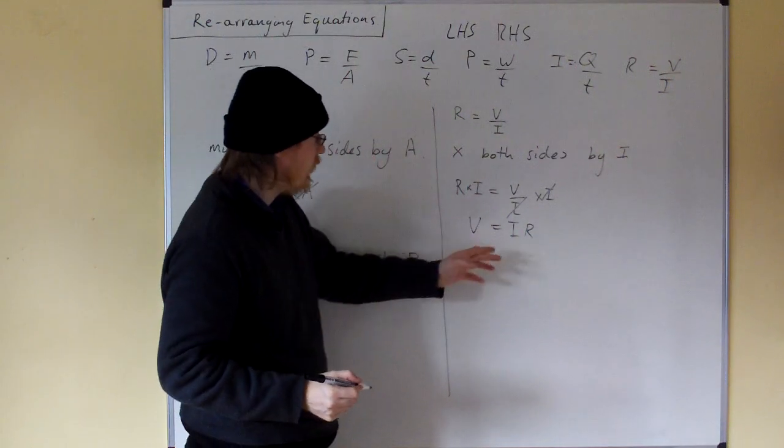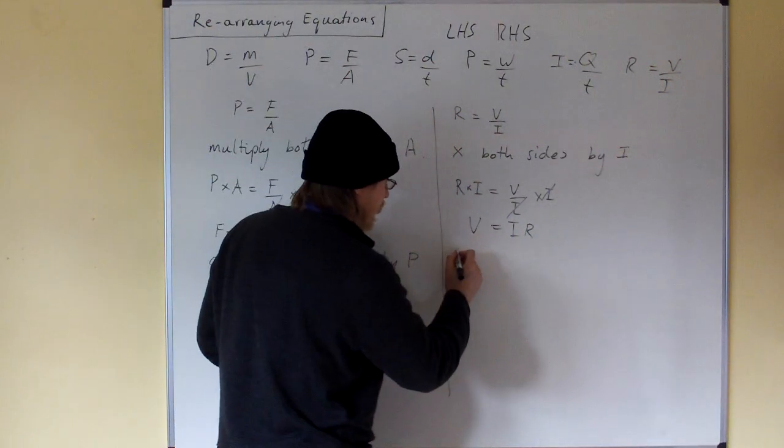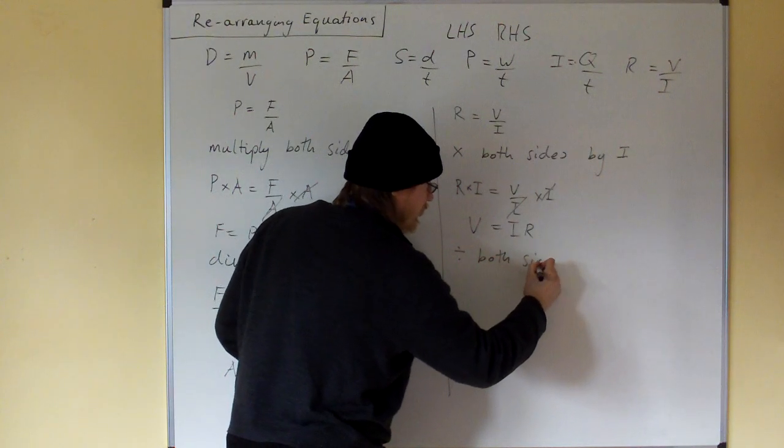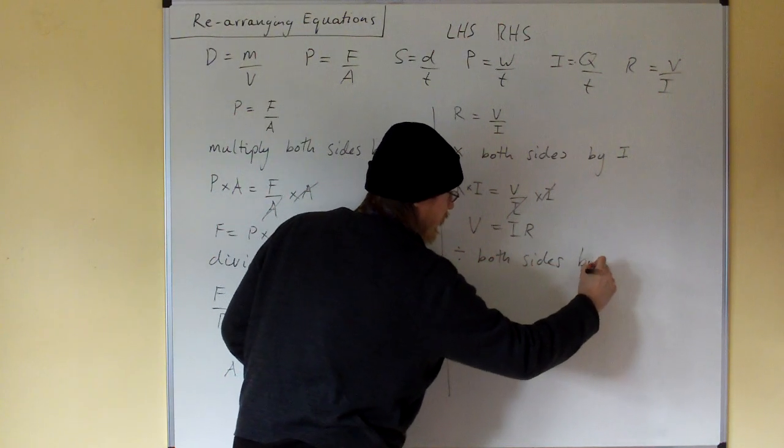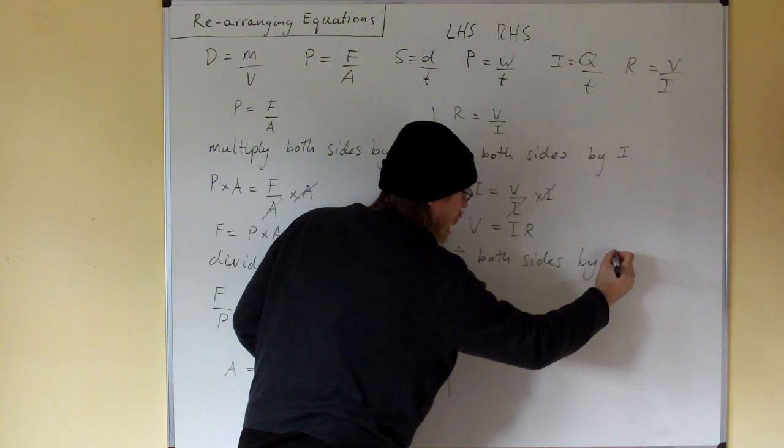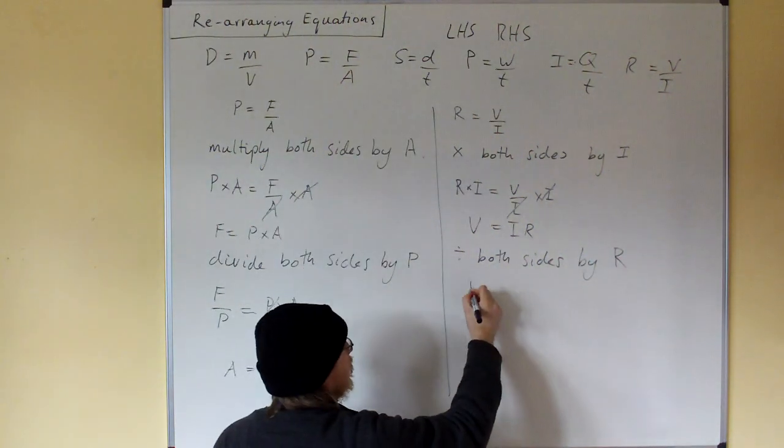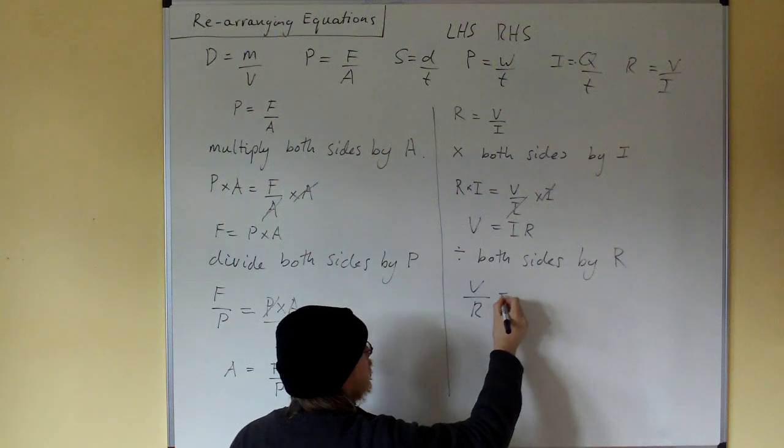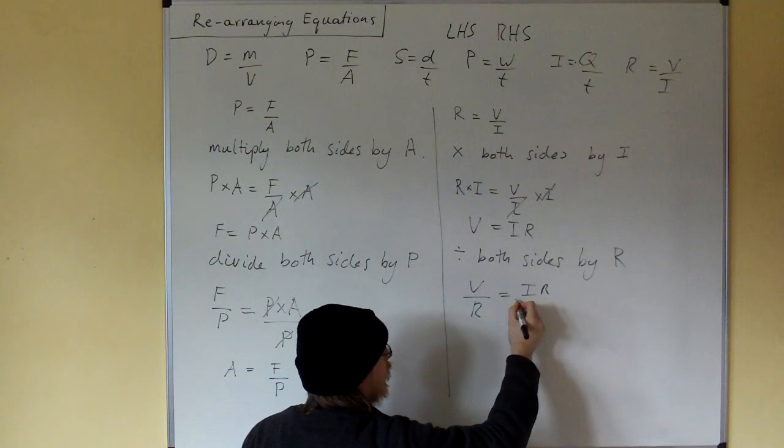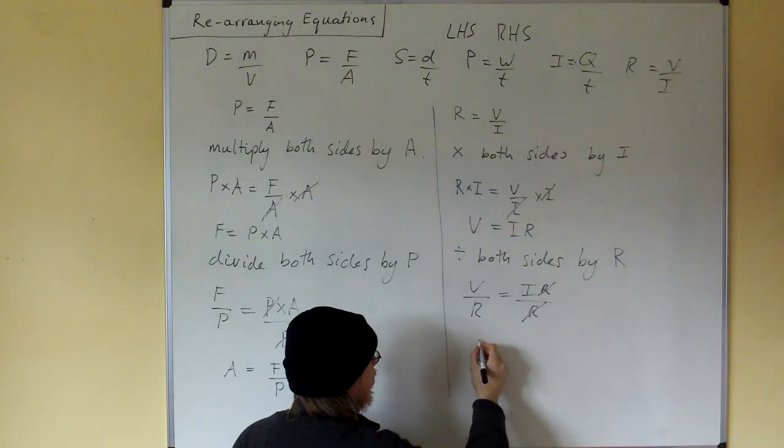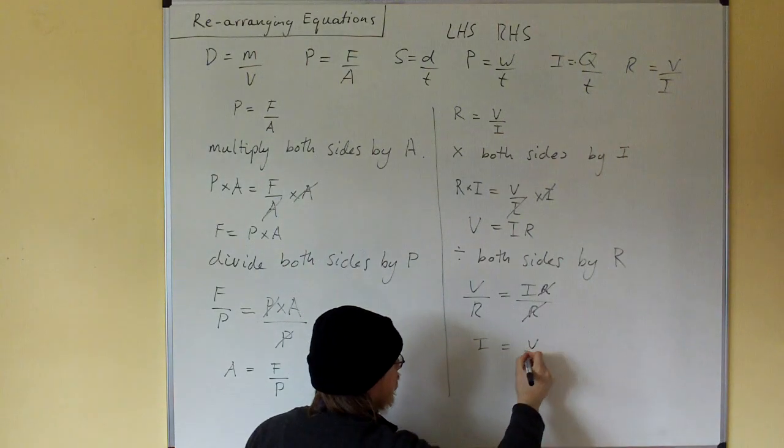OK. Now we want to get I by itself. Divide both sides by R. So we get V over R equals IR over R. The R's cancel, and we get I equals V over R.